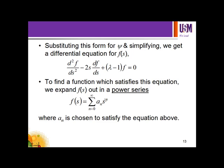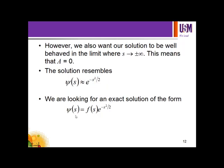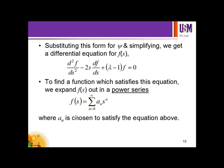Substituting this form for ψ and simplifying, we get a differential equation for F(s). Putting this ψ back into the Schrödinger equation — replacing d²ψ/ds² with derivatives of F — we now have a second-order differential and also a first-order differential term, like a quadratic equation. To find a function satisfying this equation, we expand F(s) in a power series.